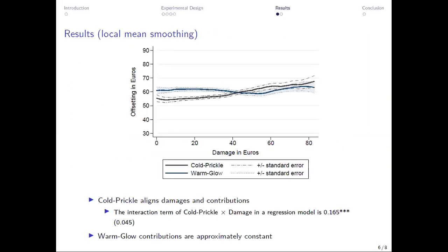And if we now plot the offsetting against the damage amounts, we see that under the warm glow frame, this is a flat curve. So there's no correlation between damage and offsetting. But under the cold prickle frame, we see upward sloping curves. So those who have a larger carbon footprint, they also offset more. So we call this the alignment effect of the cold prickle because it aligns damages and contributions.